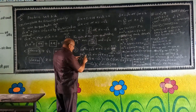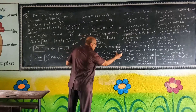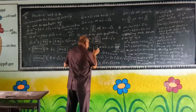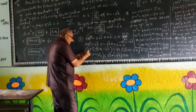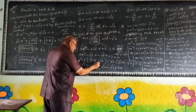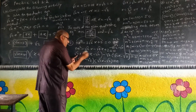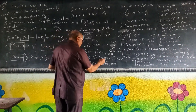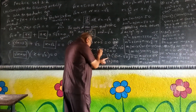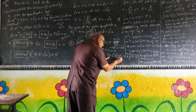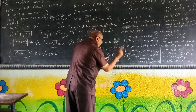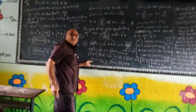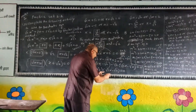So 3x squared minus root 6 x minus root 6 x plus 2 equals 0. Taking root 3 x common from the first two terms gives root 3 x into root 3 x minus root 2. Then taking root 2 common from the remaining terms. The first bracket is root 3 x minus root 2, and the second bracket is also root 3 x minus root 2, so root 3 x minus root 2 squared equals 0.